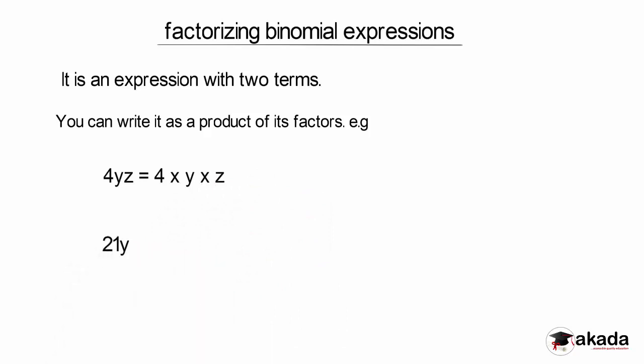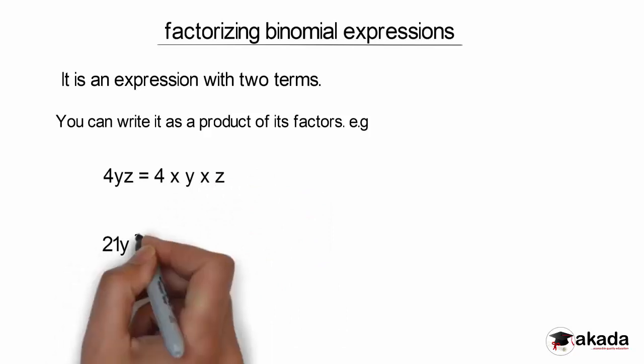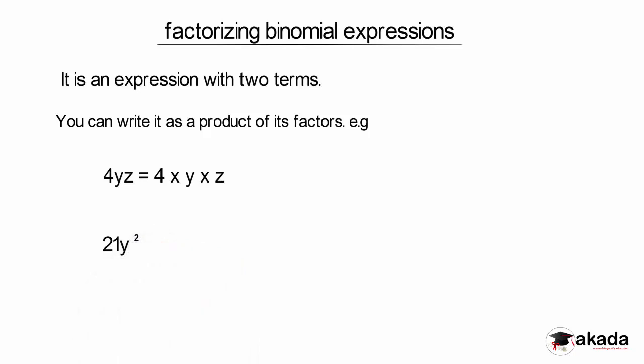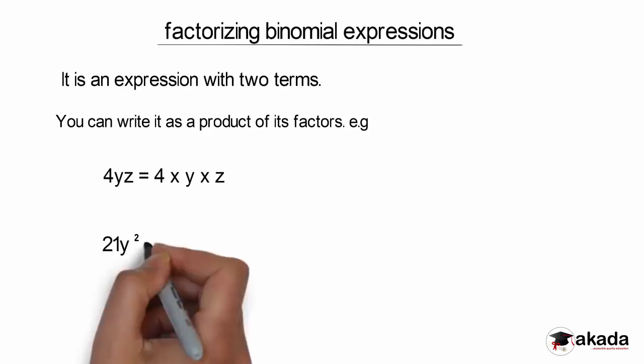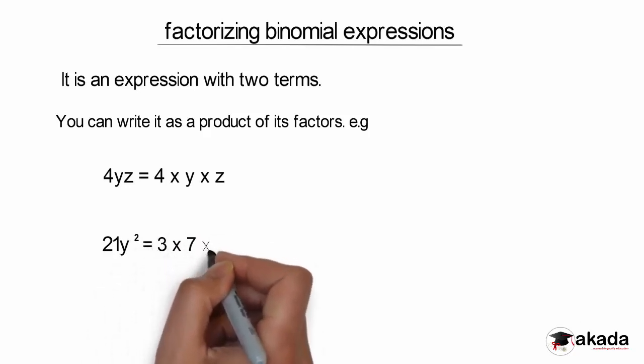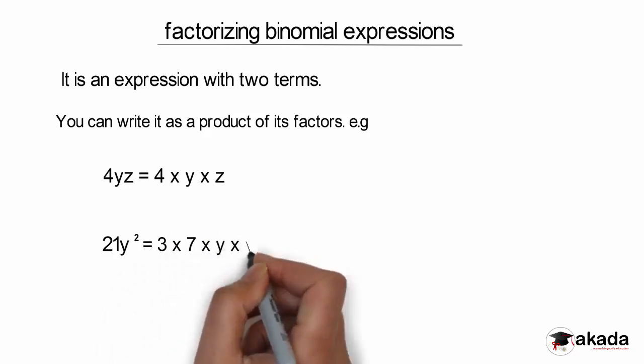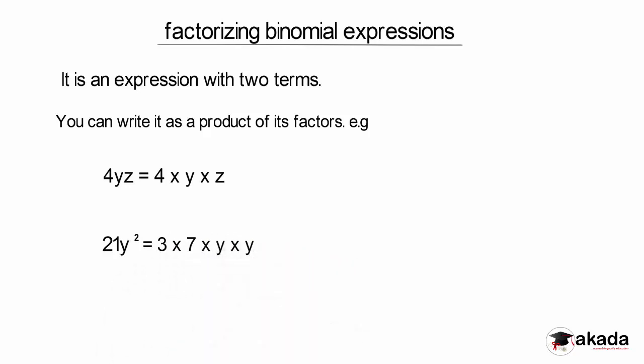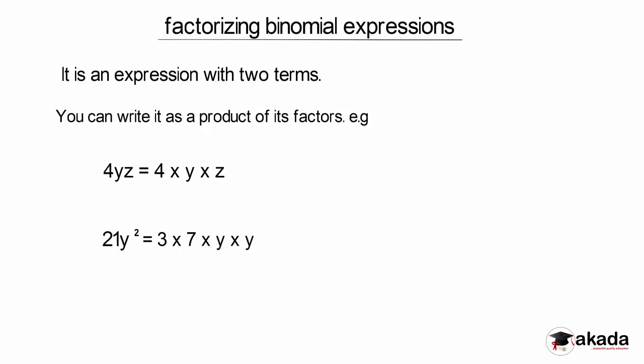Also, let's look at 21y raised to power 2. I have 21 to be 3 multiplied by 7 by y by y. This will give me 21y squared. That is what I mean by a binomial expression.